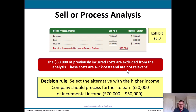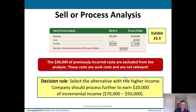In the sell or process example: selling as-is generates $50,000 with no additional cost, giving income of $50K. Processing further generates $150,000 but costs an additional $80,000, giving income of $70K. The incremental income to process further is $20,000, so the decision is to process further. Note that $30,000 of previously incurred costs are excluded because they are sunk costs and therefore not relevant.